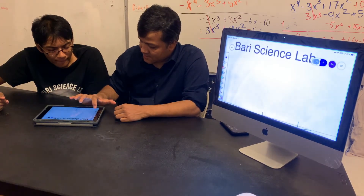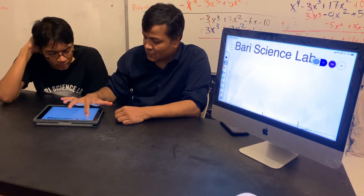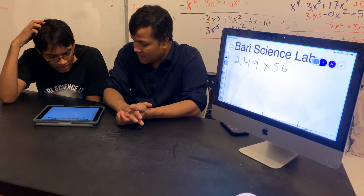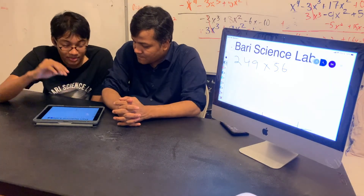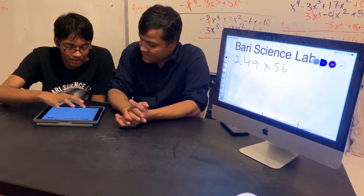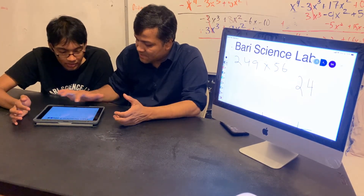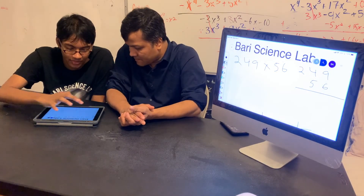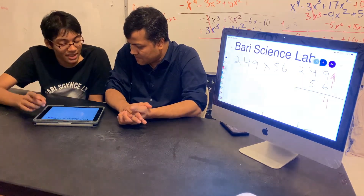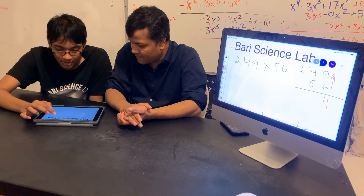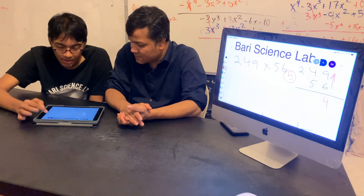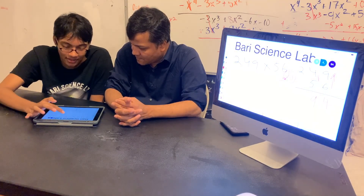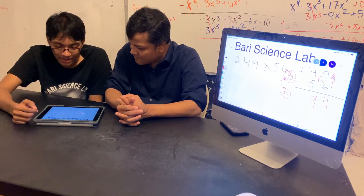Multiplication is repeated addition. Let's show 249 multiplied by 56. Stack them up — 249 and 56. First: six times nine gives me 54, but I know not to put the five here because it blocks the next column — I'll carry the five. Now six times four is 24, plus the carried five gives 29, so I carry the two. It's kind of like extra baggage.